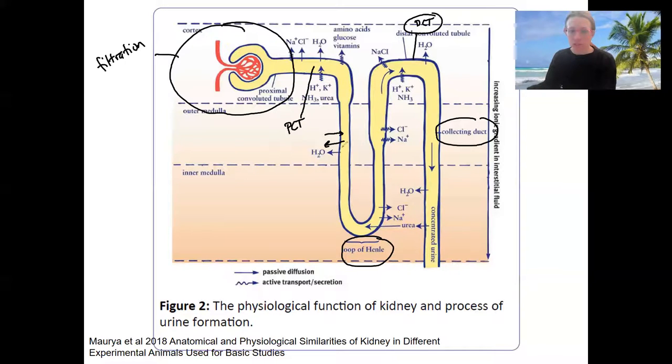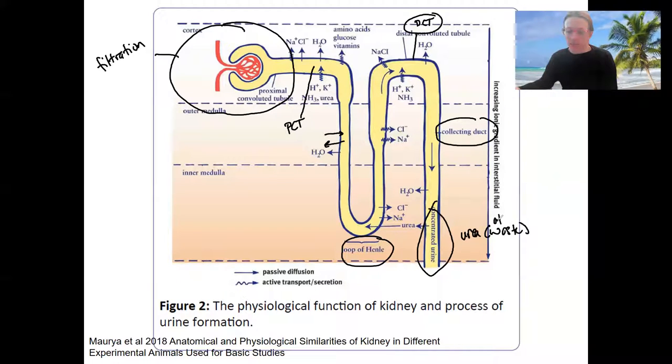Reabsorption and secretion are going to change the composition of the filtrate to ultimately produce urine. Our concentrated urine is going to be waste, such as urea and other waste, and then variable amounts of water and sodium and other compounds. To get there, it's a complicated process. So this week will be each of those components.